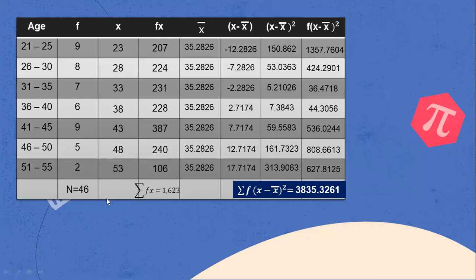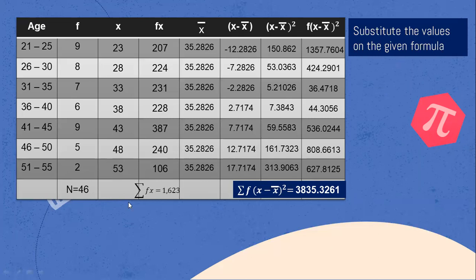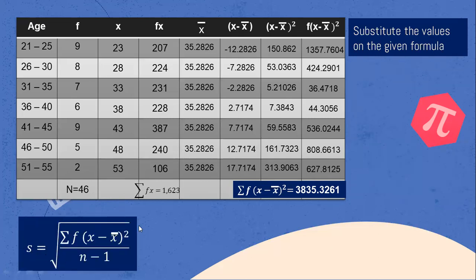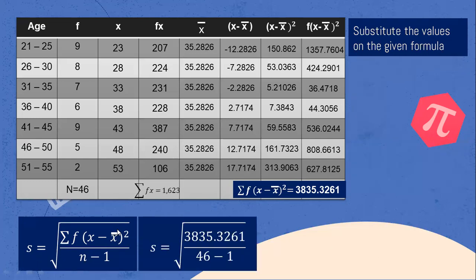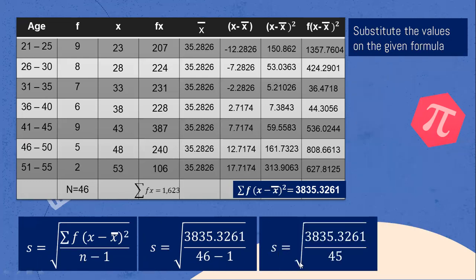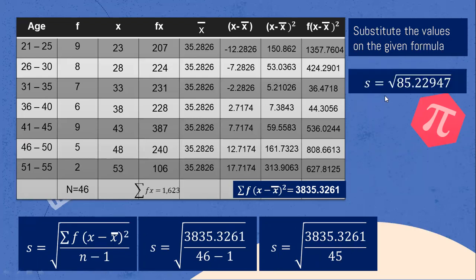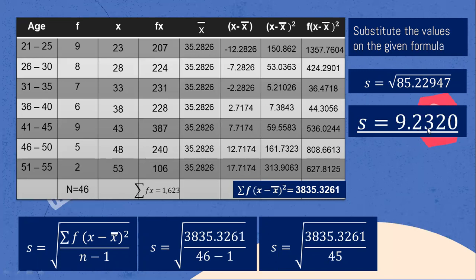Now we have all the values we need. Substitute the values into the formula. Standard deviation equals the square root of the summation of F times the square of the quantity of X minus the mean, over N minus 1. The summation is 3,835.3261, and N minus 1 equals 46 minus 1, which is 45. So we compute the square root of 3,835.3261 divided by 45, which is the square root of 85.22947. The answer is 9.2320. The standard deviation is 9.2320.